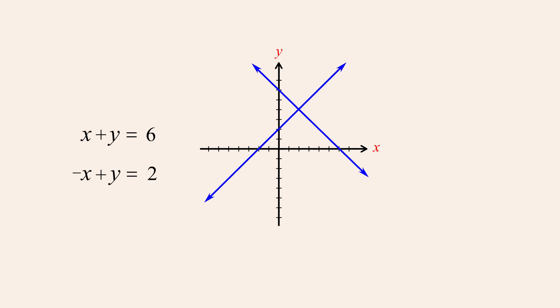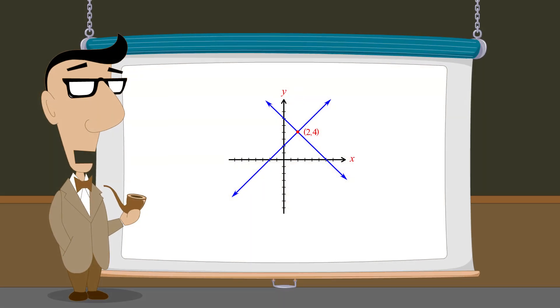In the lecture so far, we have seen how to solve systems of equations which consist of two distinct intersecting lines. Using either the substitution or elimination method, we end up with a pair of values for x and y which is the single unique solution for the system. The system is therefore a consistent system of independent equations, and its solution set contains the single ordered pair.